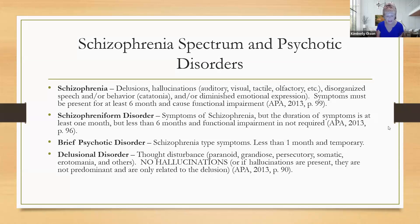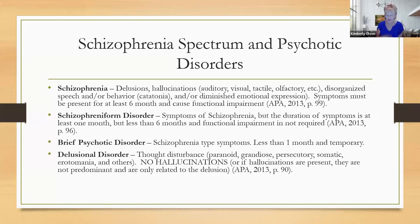So, schizophrenia spectrum and psychotic disorders. When we think of schizophrenia, we think of delusions and hallucinations, which can be auditory, visual, tactile, or olfactory. So we can see or hear things that other people don't, but we can also feel things like bugs crawling on your skin. Olfactory is smell, and if you have somebody with olfactory issues, please rule out trauma.